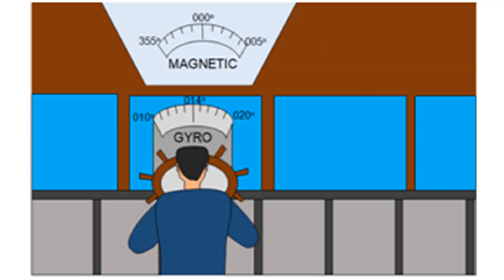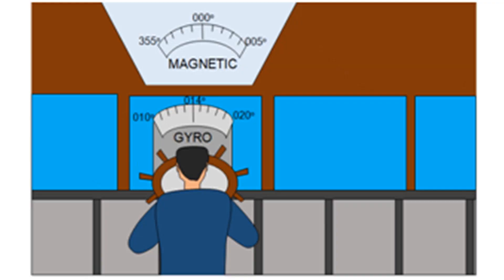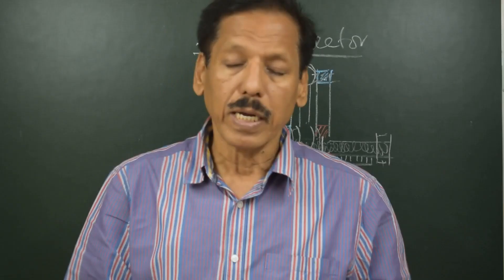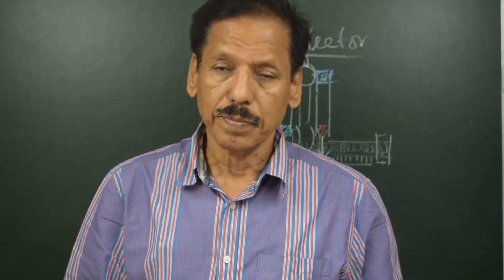He has to just steer the vessel by 001 gyro, because 001 gyro means 000 magnetic compass.